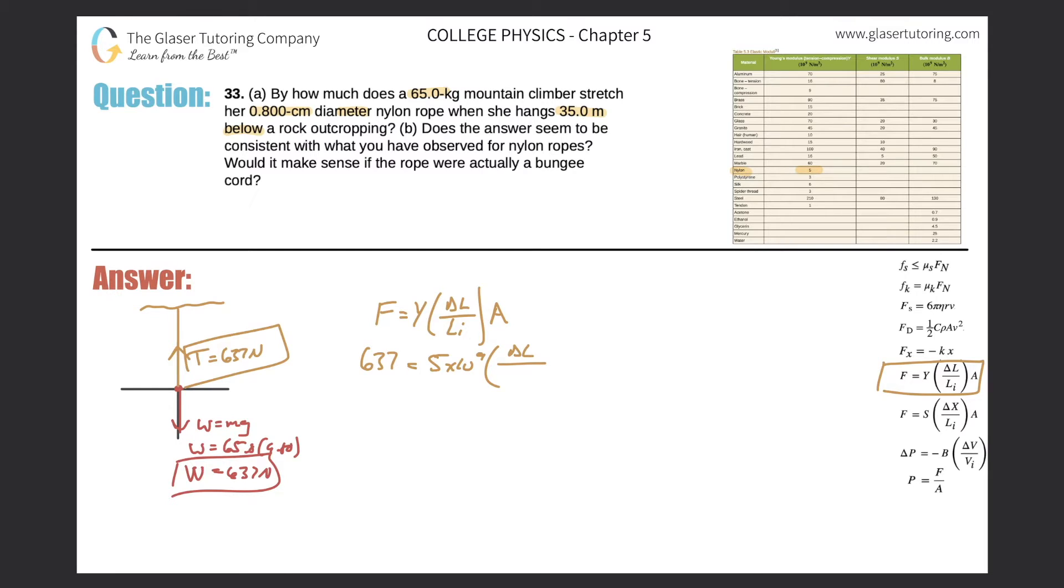The initial length of the rope—how much is that? Well, according to the question, she hangs 35 meters below the rock outcropping, so therefore I'm assuming that this total length is going to be 35 meters.